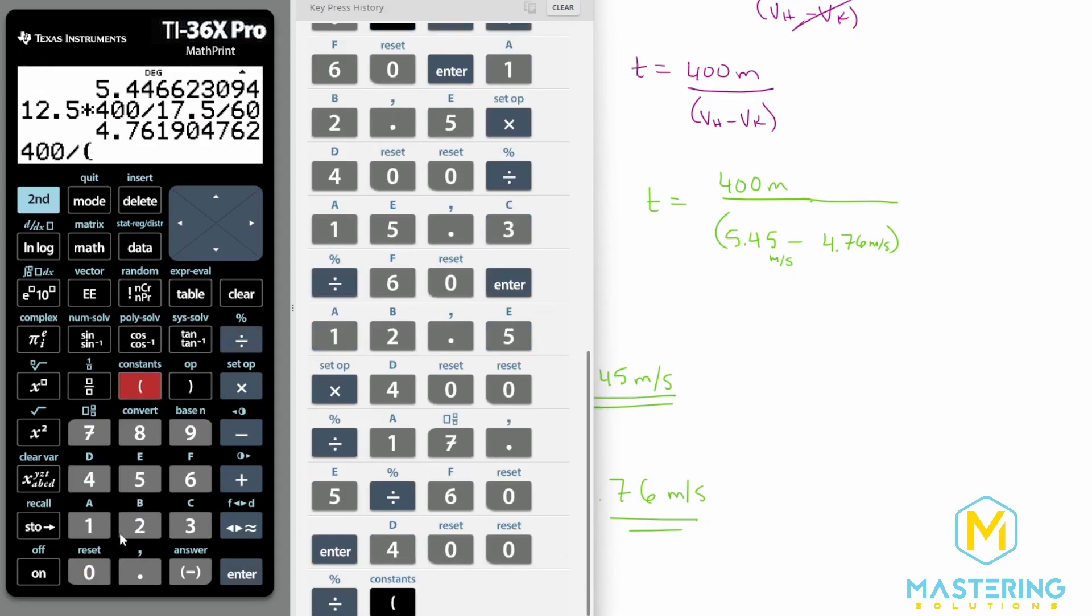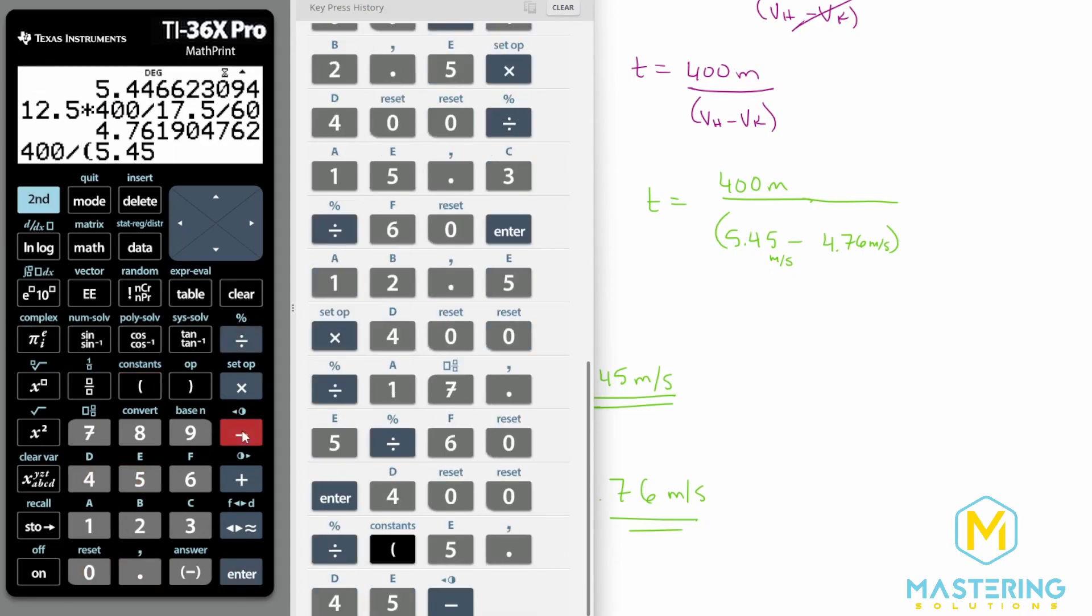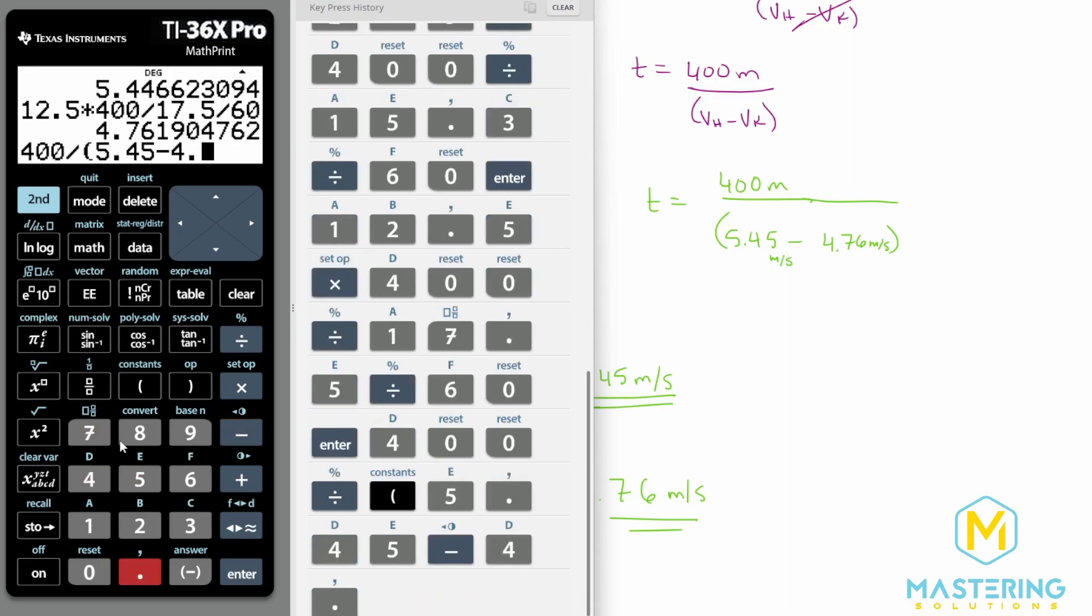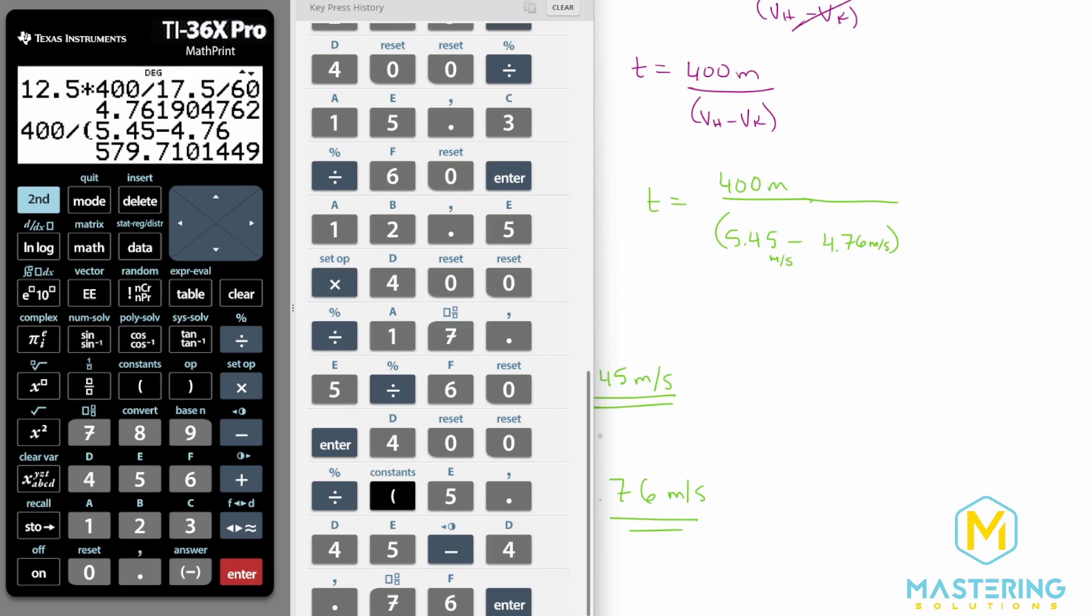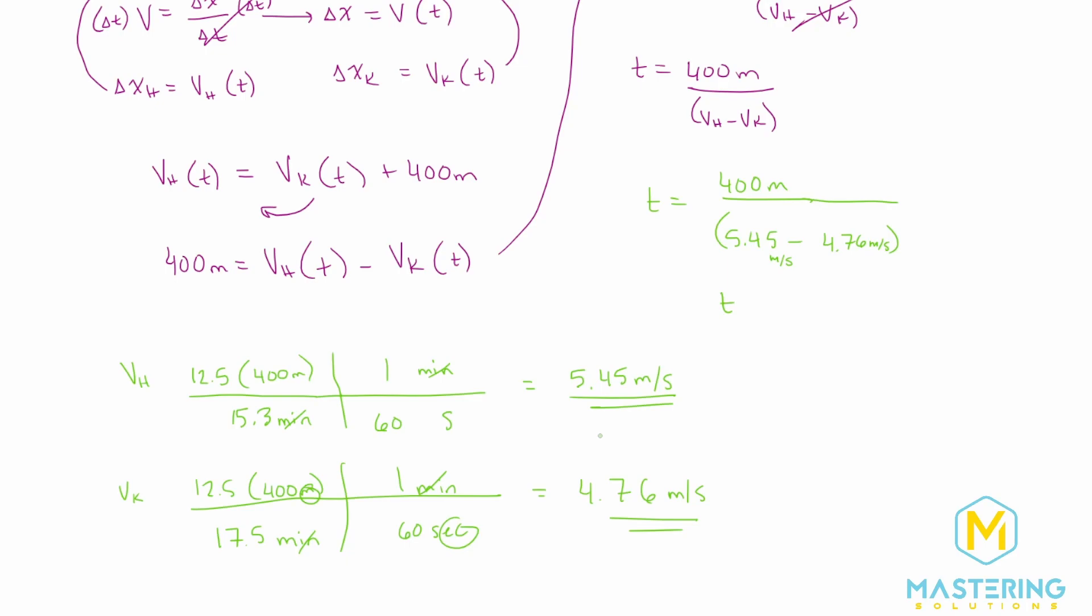400 divided by 5.45 minus 4.76 gives us 579. So we can round that to 580 seconds. So time is 580 seconds.